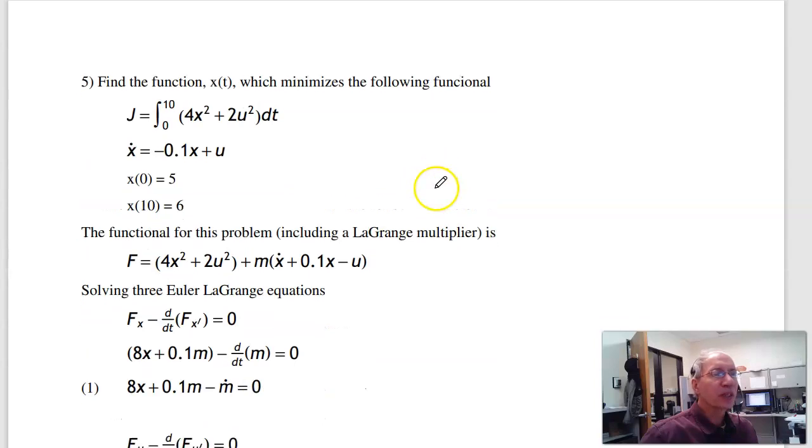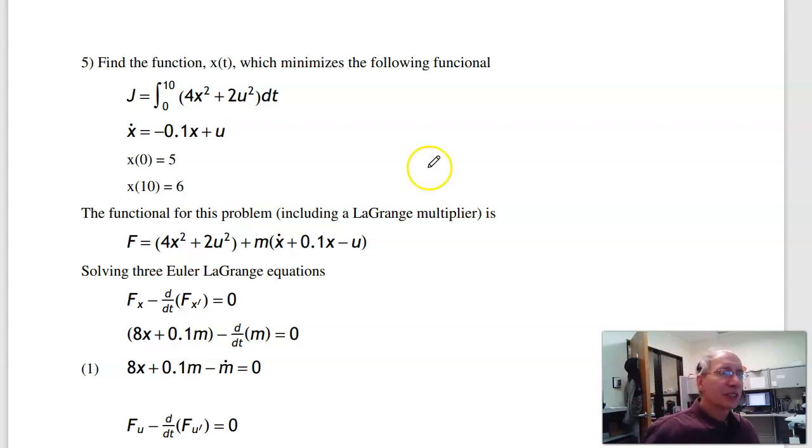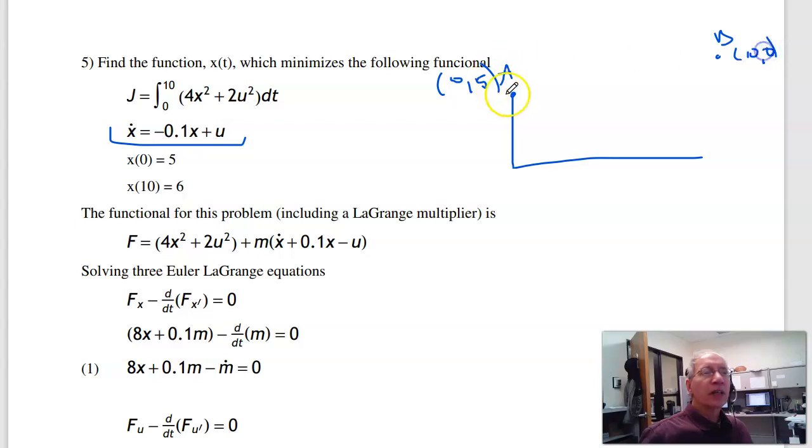The last problem, this is actually where we're starting to get into optimal control. I've got a first-order dynamic system: x_dot = -0.1x + u. I want to minimize this cost function: minimize 4x² + 2u². Subject that at t=0, I'm at 5. At the end I want to be at (10,6). Point B is at (10,6), at 10 seconds I'm at 6. What path minimizes this cost functional for that dynamic system?